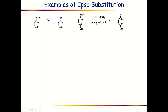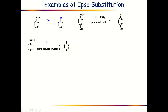This process is actually called proto-desilylation. Another very interesting example is also a proto-desilylation reaction: if we treat benzene sulfonic acid with H+ under heating conditions, this SO3H group will be replaced by a hydrogen atom and we will get the pure benzene molecule.